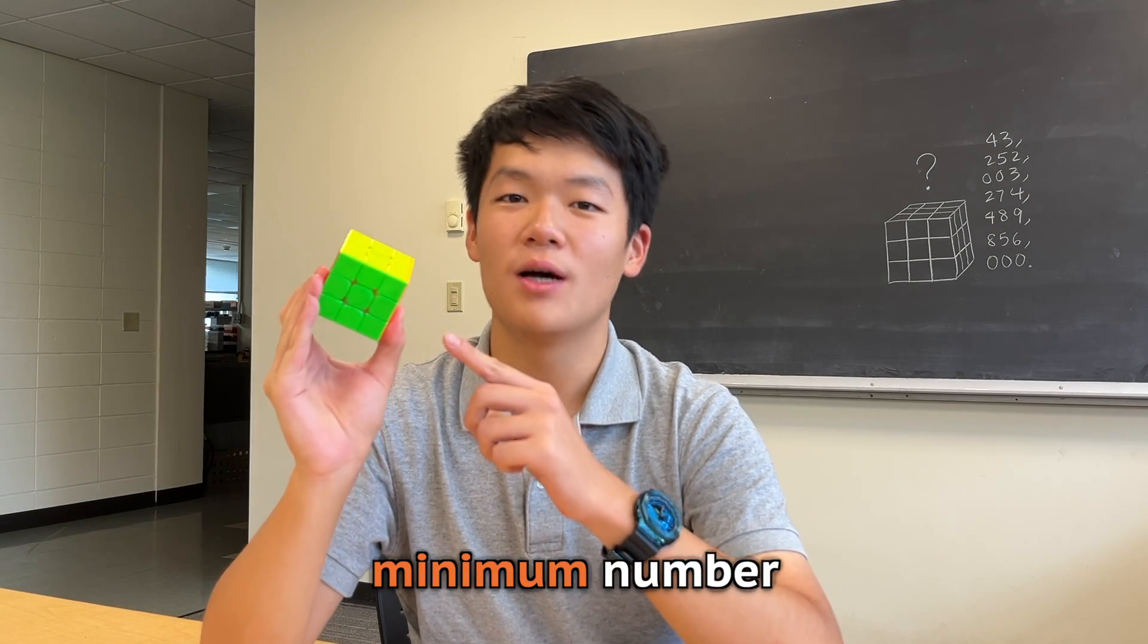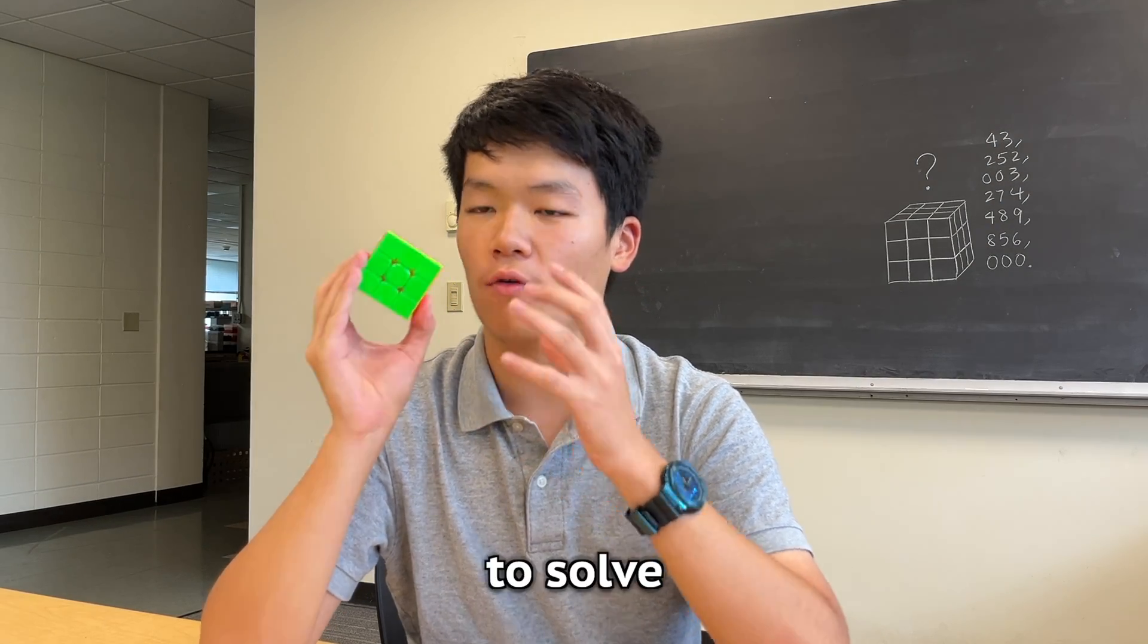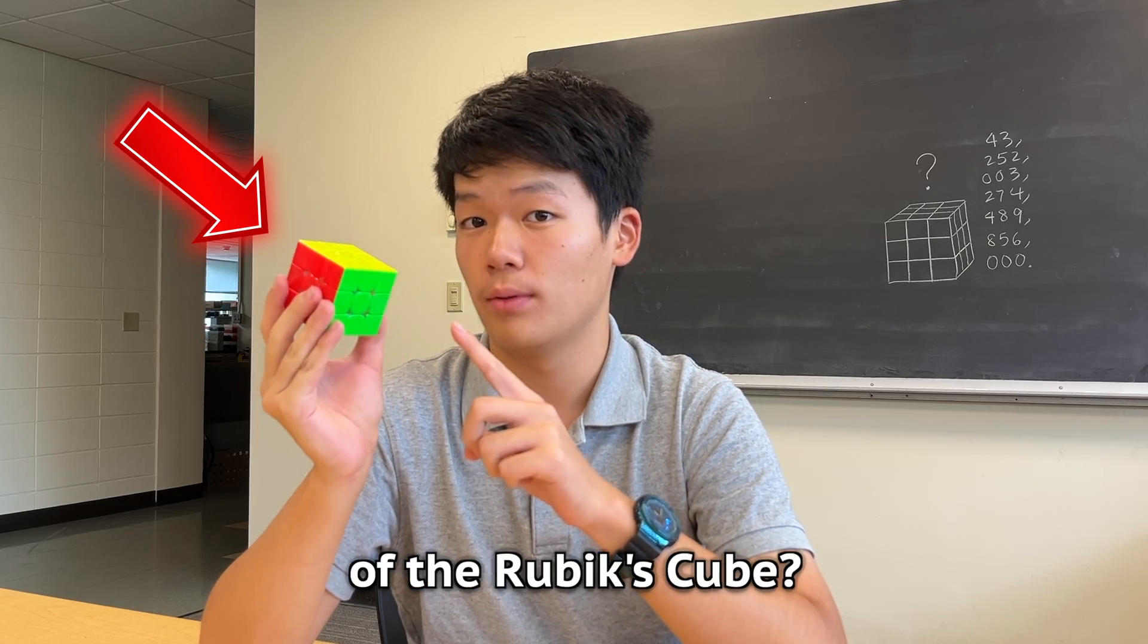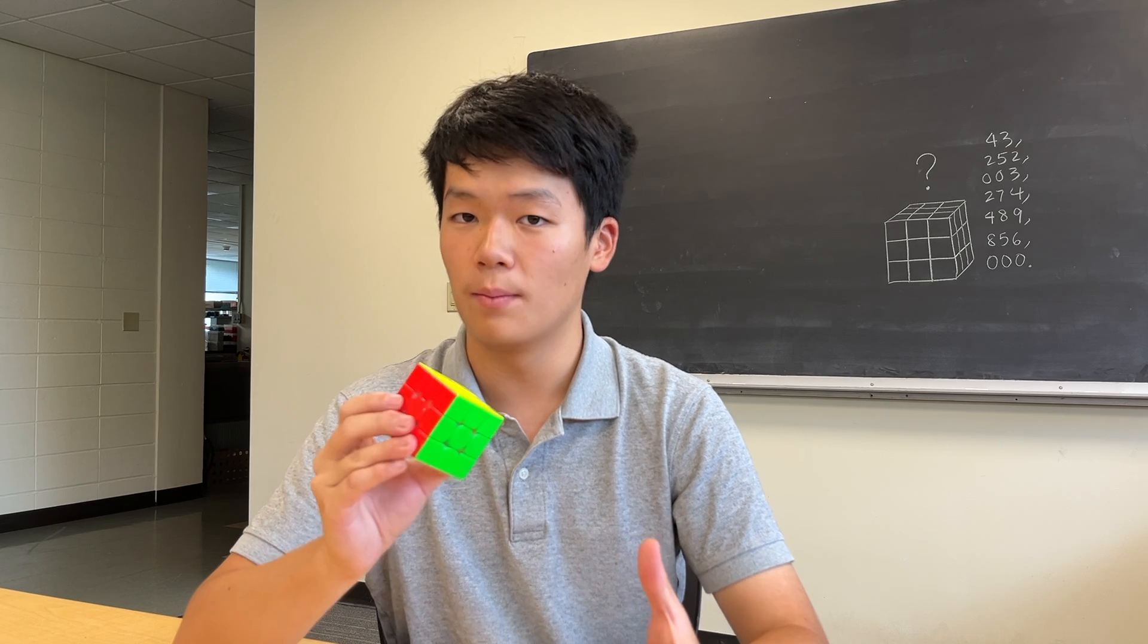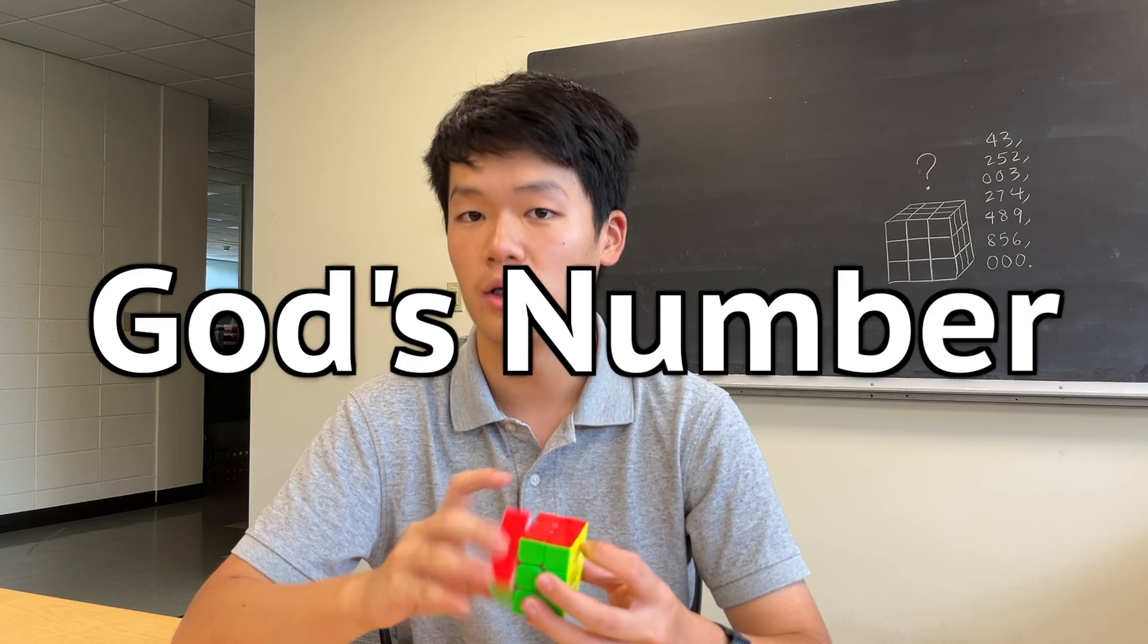What is the minimum number of moves needed to solve any scramble of the Rubik's Cube? This question stunned mathematicians for years, and this magical number was to be called God's number.